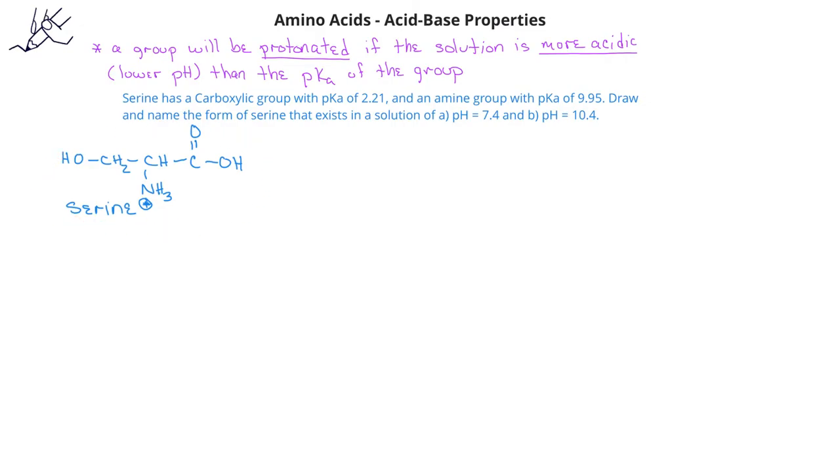The alpha carboxylate group has a pKa of 2.21 and the alpha amino group, the protonated form, has a pKa of 9.15. What form of serine would we have if we had it in a solution of each of the following pH values?